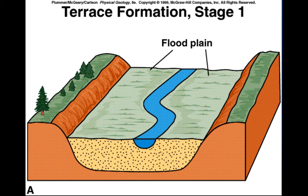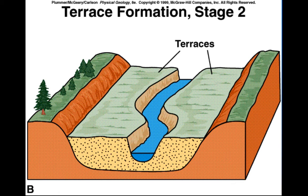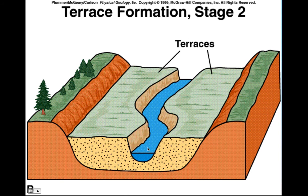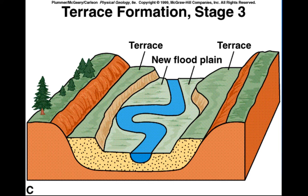Here the stream has established its position. Over time, tectonic uplift causes more downcutting. This area was once the old floodplain, and now the stream has downcut because of tectonic uplift or stream rejuvenation. Over time, the stream will make its own new floodplain as erosion occurs, and we'll see an abandoned terrace higher up.